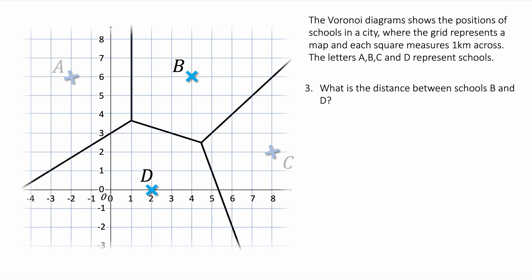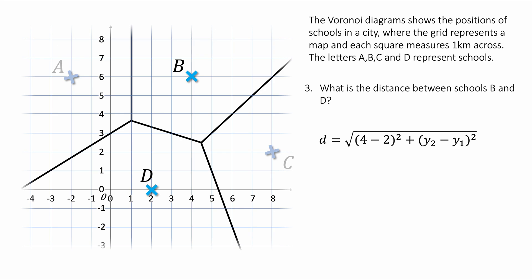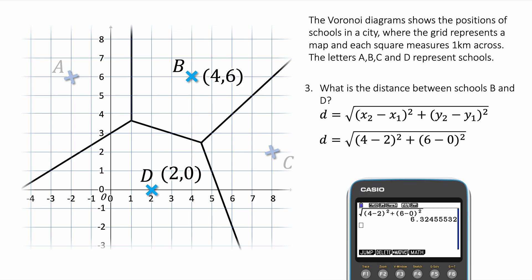Question three: what is the distance between schools B and D? This is using the distance formula. If you're interested, this comes from Pythagoras theorem, but it is just a formula in your formula booklet. I put the coordinates into the equation like this, the x coordinates and the y coordinates. I type this into my calculator like this and I get 6.324. The distance is that, which rounds to three significant figures as 6.32 kilometers.